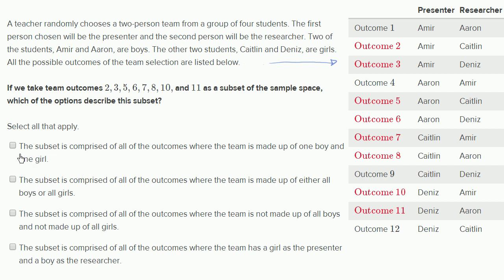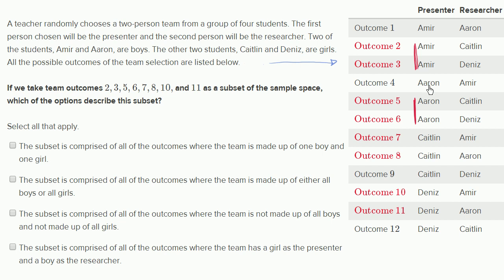The first option: the subset is comprised of all the outcomes where the team is made up of one boy and one girl. These are the outcomes where Amir is paired up with a girl — there are two possible girls Amir could be paired with, with Amir as presenter and one of the girls as researcher. Then Aaron as presenter has two scenarios where he's paired with a girl, either Caitlin or Denise. So outcomes 2, 3, 5, and 6 are all the scenarios where we have a boy presenter paired with a girl researcher.